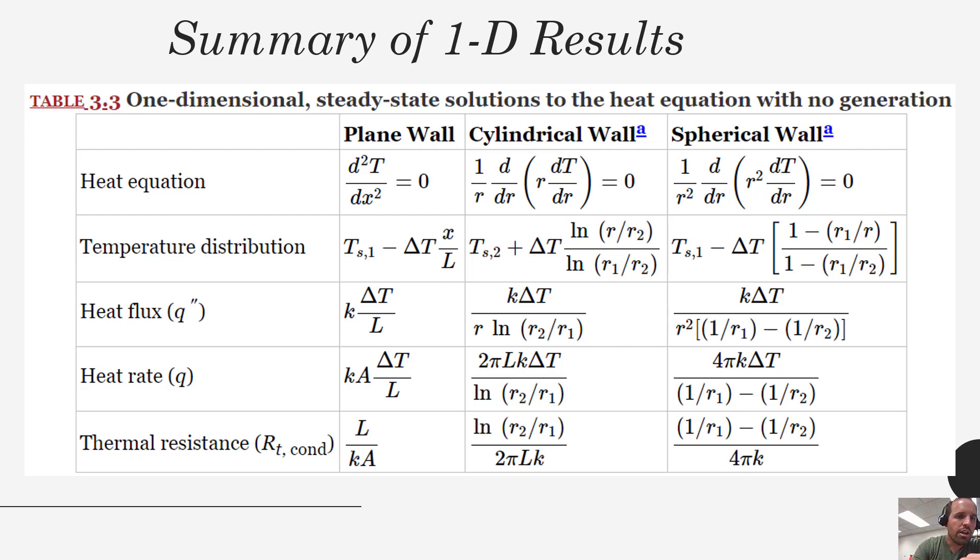Here on this top row we have the appropriate form of the heat equation that we're solving for each system. And notice that K, our thermal conductivity, has dropped out of here because you can pull that out of the differential and then divide both sides by K to eliminate it under these particular circumstances.